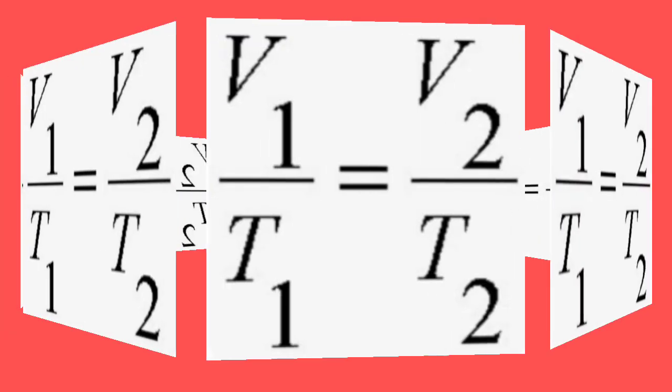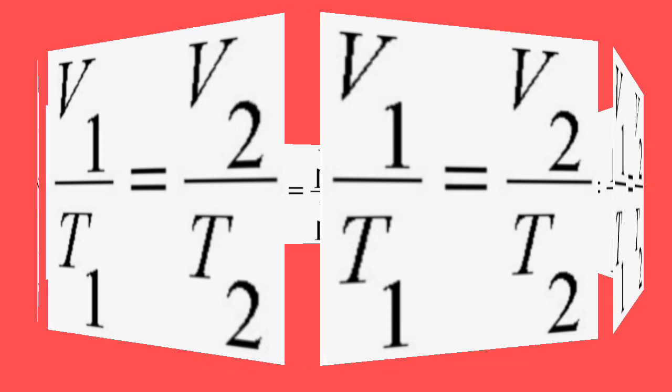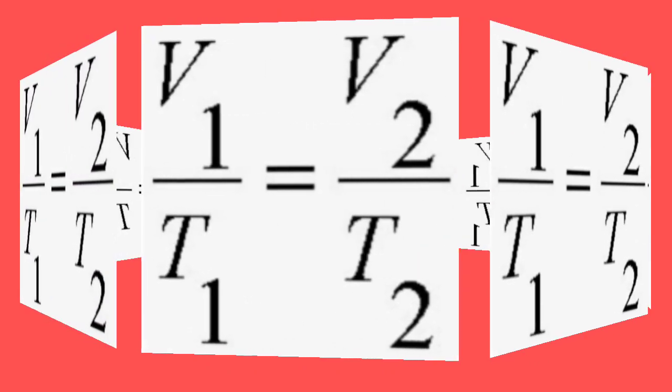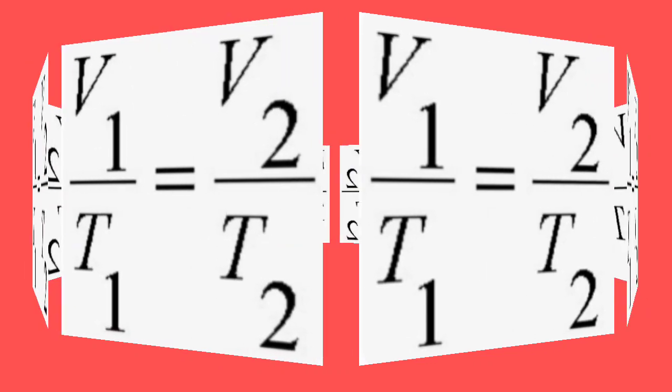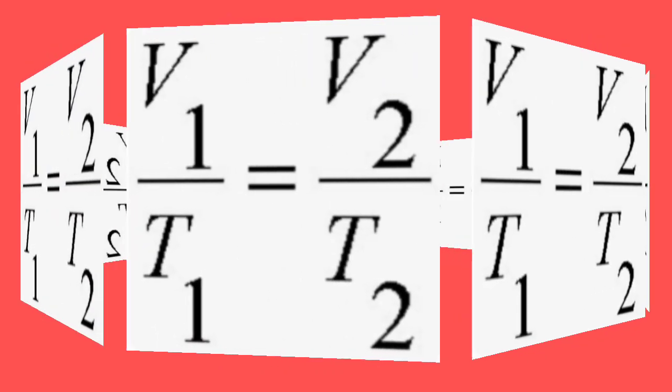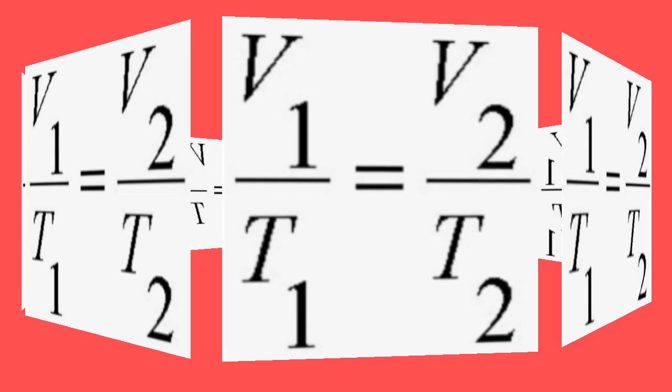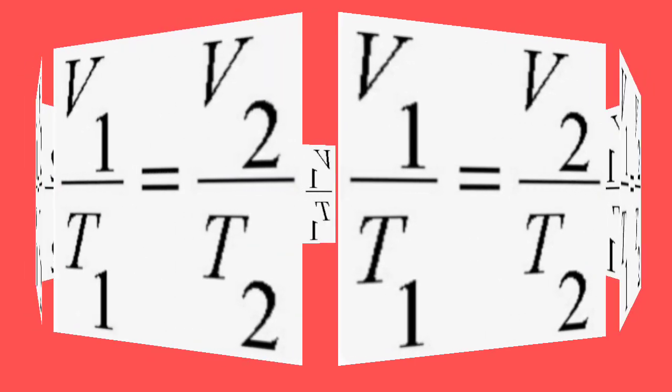If initial volume and temperature are V1 and T1 and final volume and temperature are V2 and T2, then according to Charles law, the formula is V1 upon T1 equal to V2 upon T2.